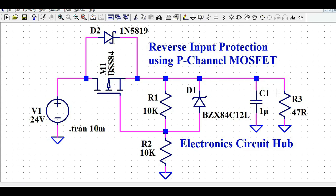Once MOSFET M1 turns on, it delivers voltage to the load. Now, if the battery is connected with the wrong polarity, the negative voltage appears at the drain. The body diode anode is at negative voltage and the cathode is more positive, so the diode does not conduct. Since the diode won't conduct, M1 won't conduct, and no output is delivered.